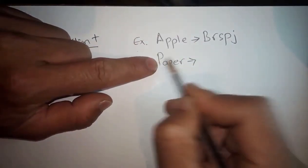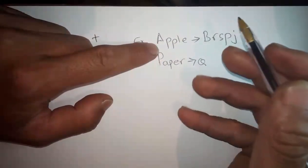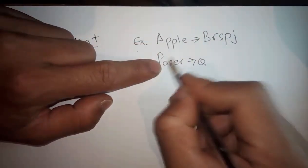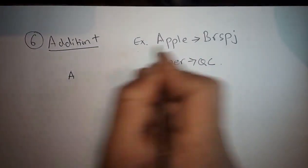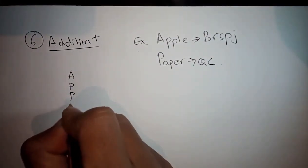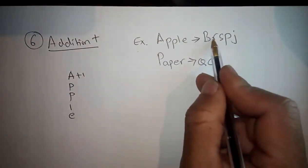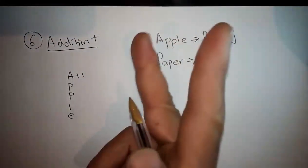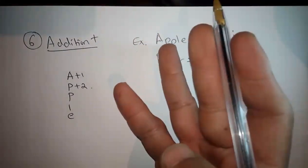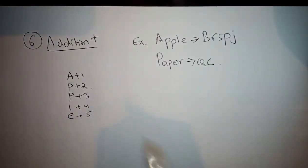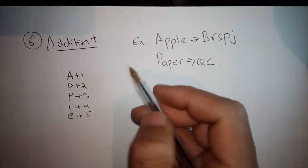Usually A becomes B, P becomes Q, P becomes Q, R. A simplified version: Apple has letters A, P, P, L, E. First one is plus one, which gives B. Second one is P plus two becomes QR. This is plus three, plus four, plus five - a sequence with addition plus.